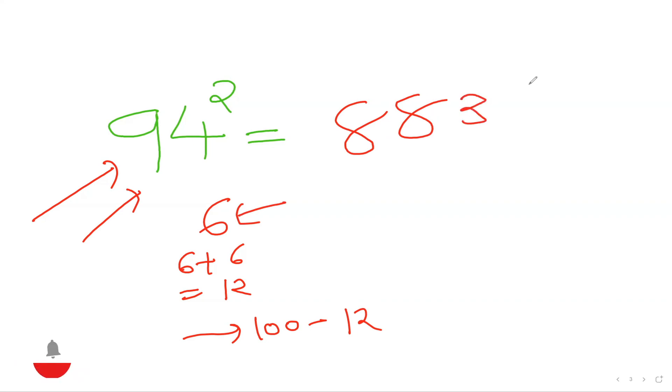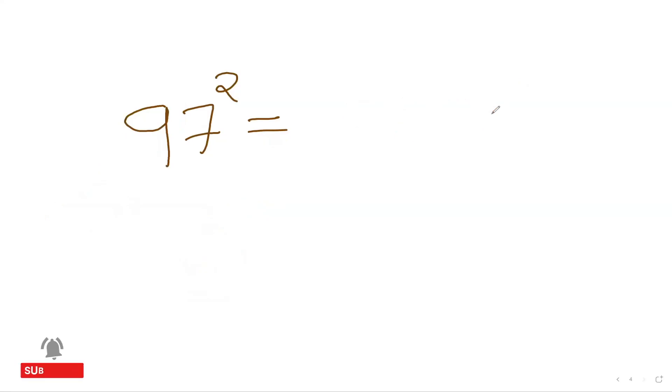One more example and then you'll be the master. Let's say I'll find out the square of 97. So again, the difference from 100 is 3. 3 plus 3 is going to be 6.